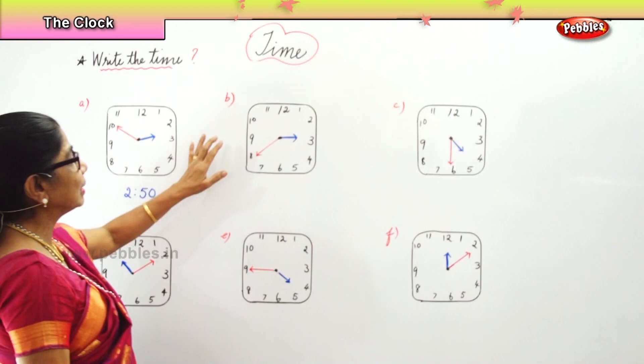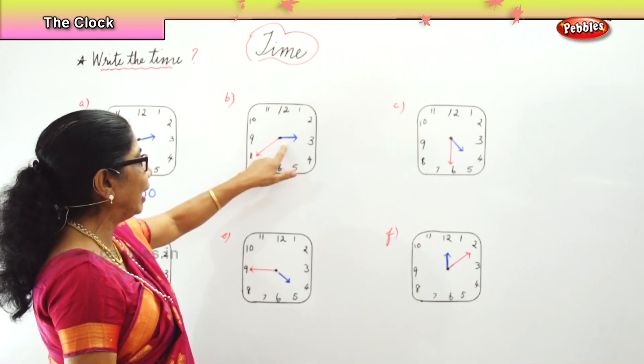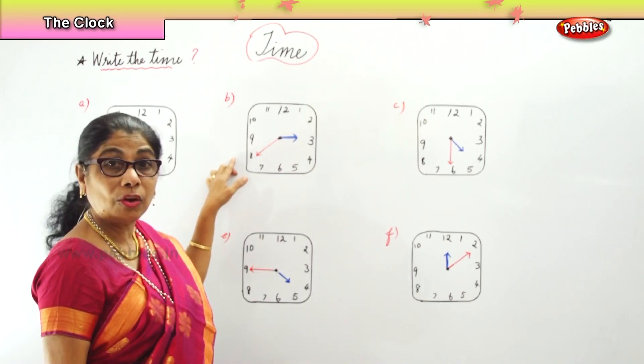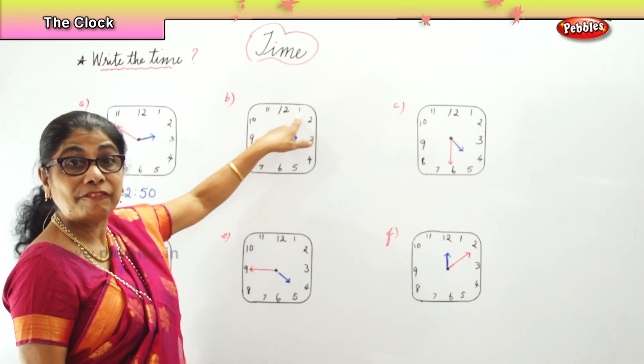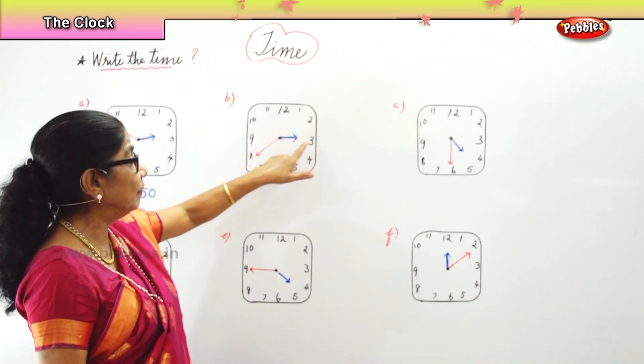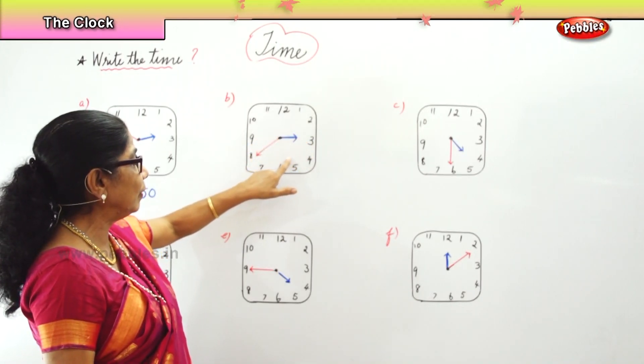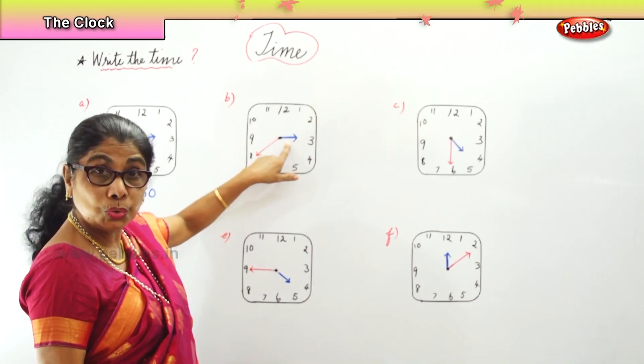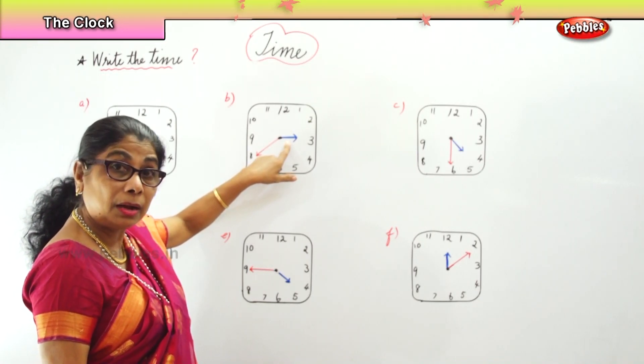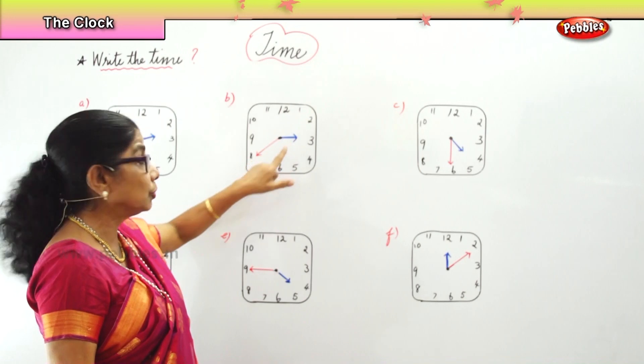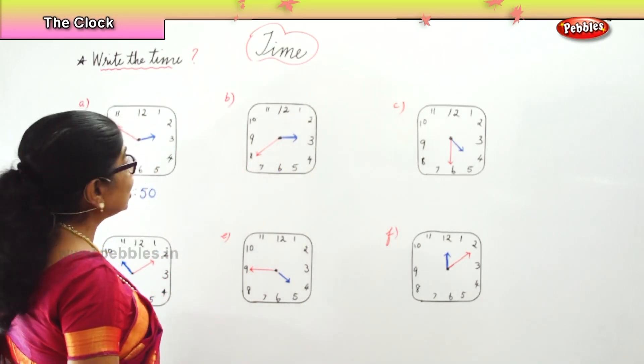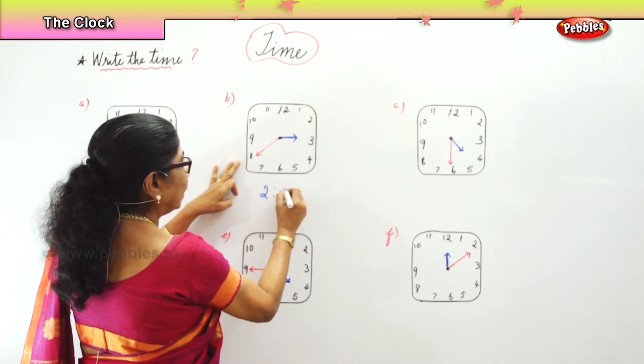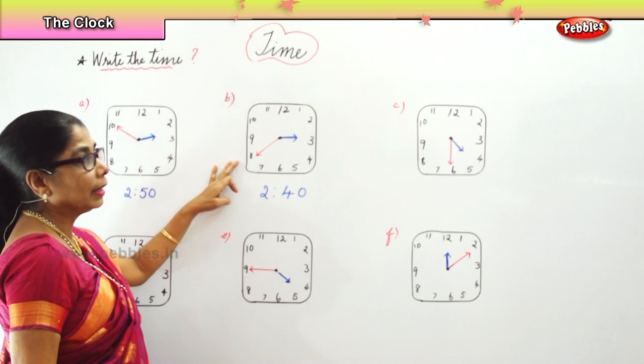Now let's look at the second one. Here you have the hour hand on three and you have the minutes hand on eight. Three and now thirty-five. That is two hours past forty minutes. So that is two hours past forty minutes.